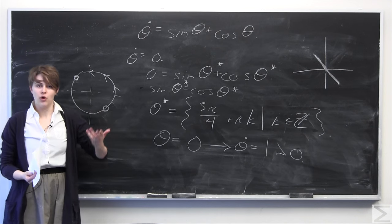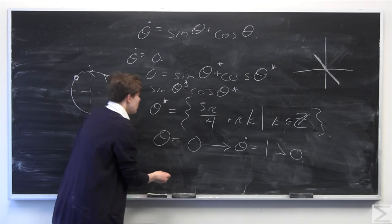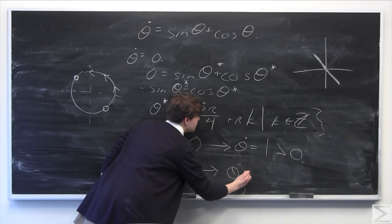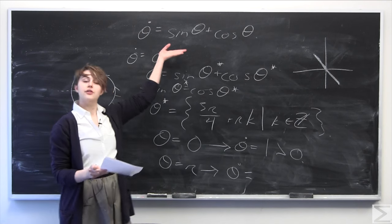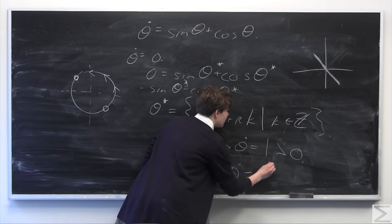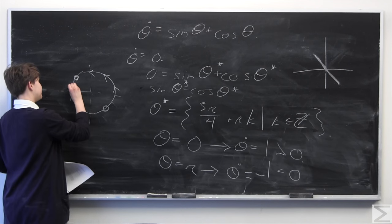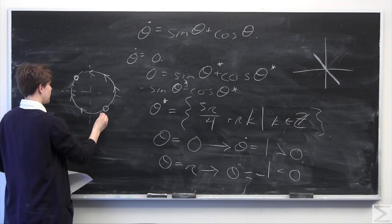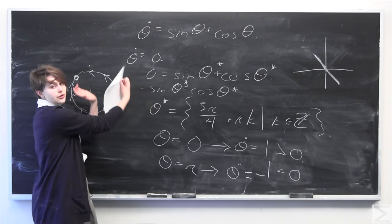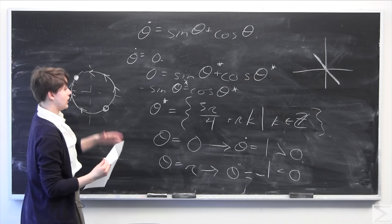We plug in one more test point at theta equals pi. When theta equals pi, sine of pi is 0 and cosine of pi is negative 1, so theta dot equals negative 1, which is less than 0. So the flow is going in the negative direction there. We see that one fixed point has flow going away from it — making it unstable, or a source — and the other has flow going toward it, making it stable, or a sink.